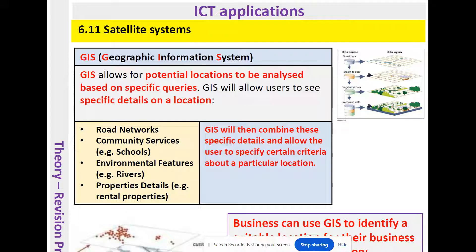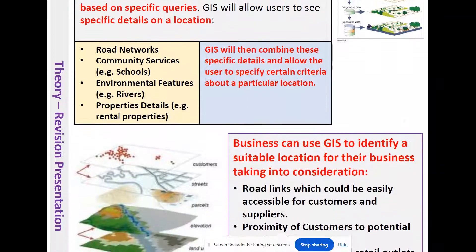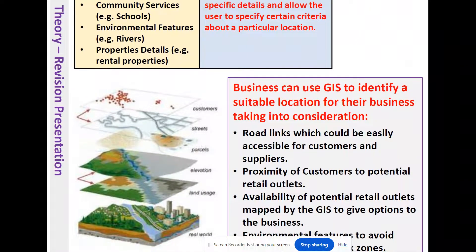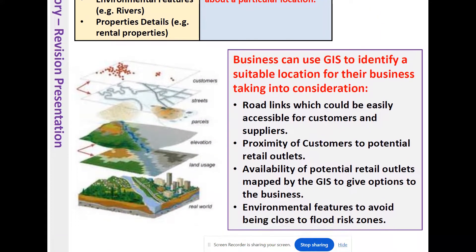You'd also want to know about community services — for example, are you surrounded by schools? Environmental features — are you next to a river or near somewhere that floods periodically? And you'd also want details on property values and rental prices. GIS combines these specific details and allows users to specify certain criteria about a particular location.